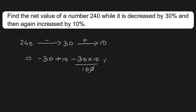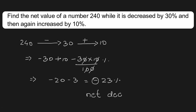The zeros get cancelled. Minus 30 plus 10 is minus 20, minus 3, that is nothing but minus 23 percent. Since the answer is negative, there is a net decrease.